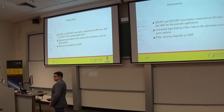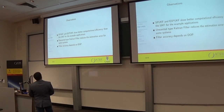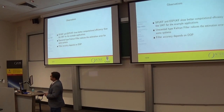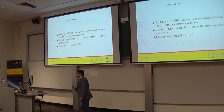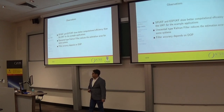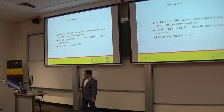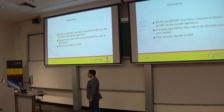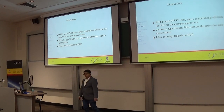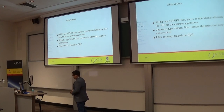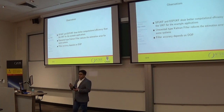Key observations: SPUKF and ESPUKF give greater computational efficiency than UKF for the example applications, except for LEO satellite navigation. The unscented Kalman filter reduces estimation error for some systems — why? And filter accuracy depends on DOP — again, why? These are the questions we try to answer.